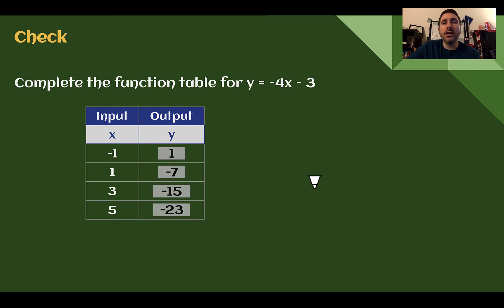Let's check. Here are your outputs. So the rule you should have been using is negative 4x minus 3. So this is negative 4 times x, then subtract 3. If we multiply a negative times a negative, we end up with positive 4, subtract 3, that's where we get our 1. 1 times negative 4 is negative 4, minus 3 is negative 7. 3 times negative 4 is negative 12, minus 3, negative 15. And 5 times negative 4 is negative 20, minus 3 is negative 23. So again, each time I was plugging in my input, simplifying it out, whatever I get, that's my output, that's my y.